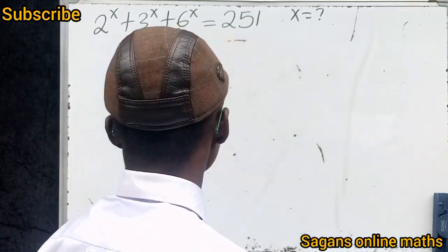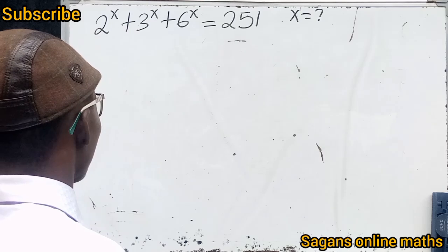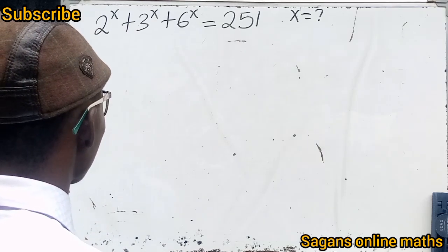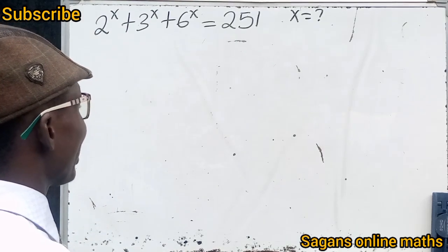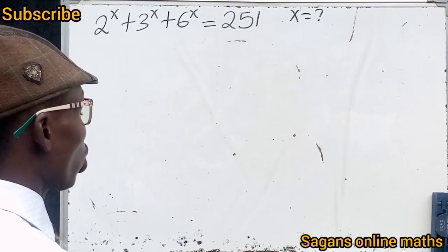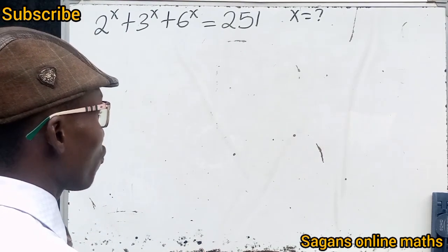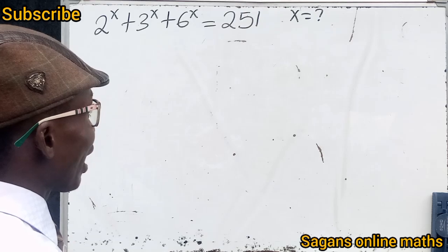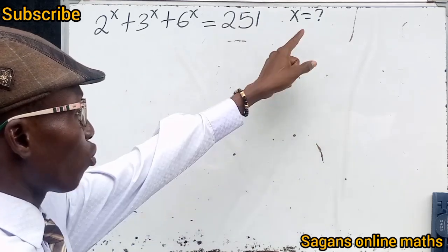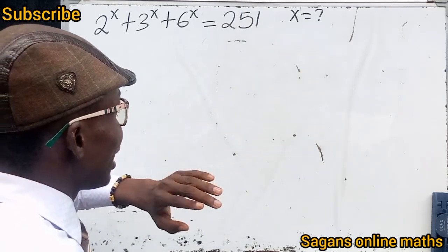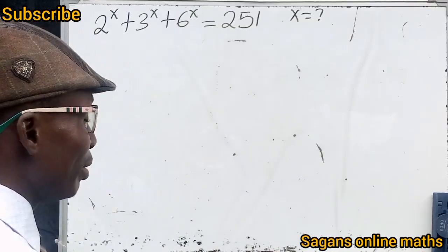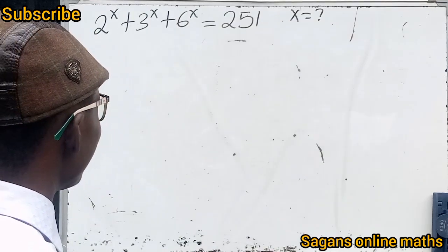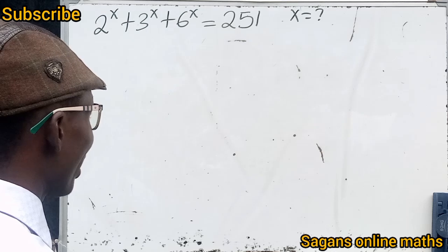Look at what we have on the board: 2 raised to the power of x, plus 3 raised to the power of x, plus 6 raised to the power of x, equals 251. We are asked to find the value of x. This problem is very simple.